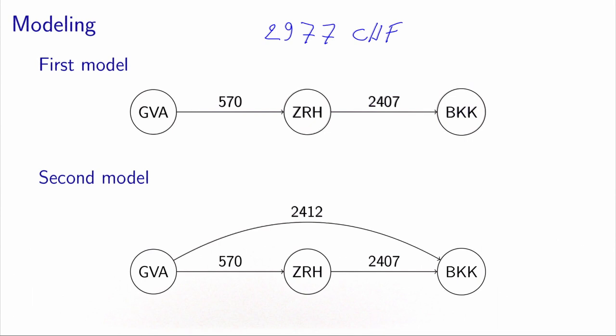One way to deal with this is to add a direct arc from Geneva to Bangkok with the real cost of 2,412 francs. The direct arc represents buying a through ticket, while the two-arc path represents buying two separate tickets — which can actually happen. However, this second model may not be best for all applications, because the direct arc does not represent a real flight, making it more complicated to represent capacities.